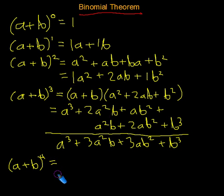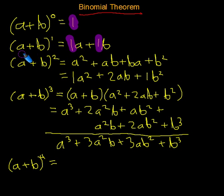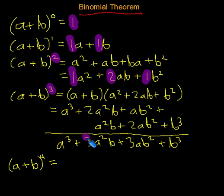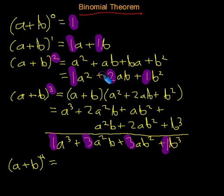Before I show you the easier way to multiply out a plus b to the fourth power, I want you to notice something. Look at the coefficients from the results: a plus b to the zero power gives 1; to the first power gives 1, 1; to the second power gives 1, 2, 1; and to the third power gives 1, 3, 3, 1. These numbers are not coincidental — there's a pattern here.